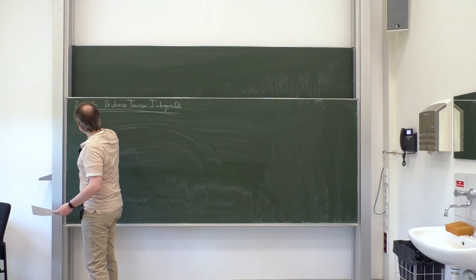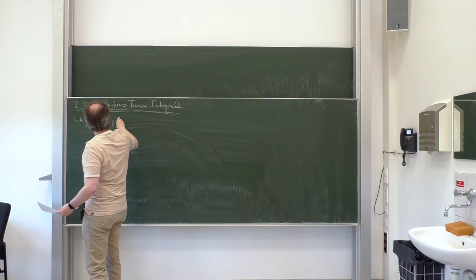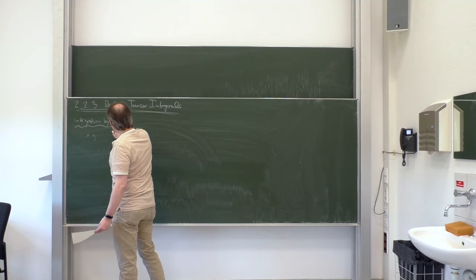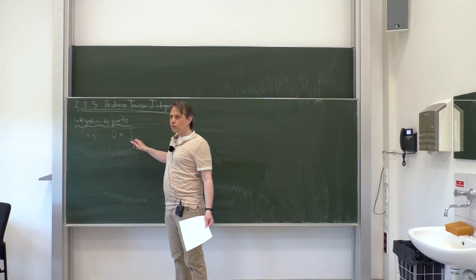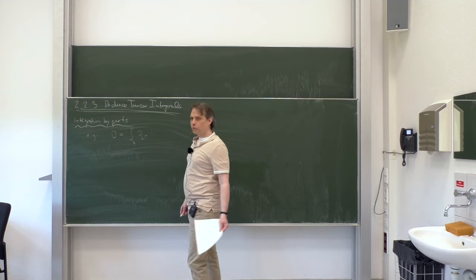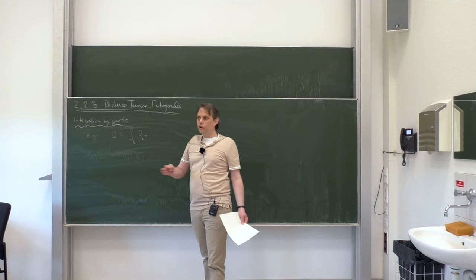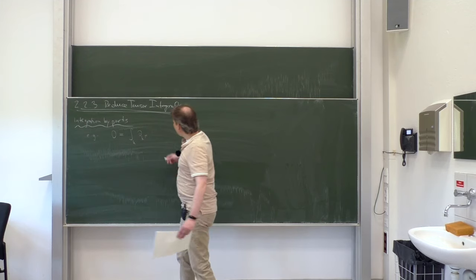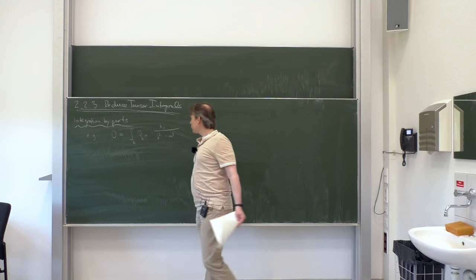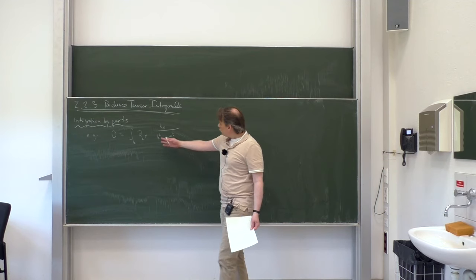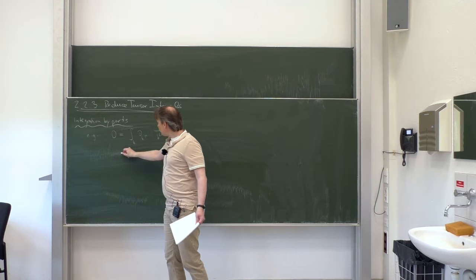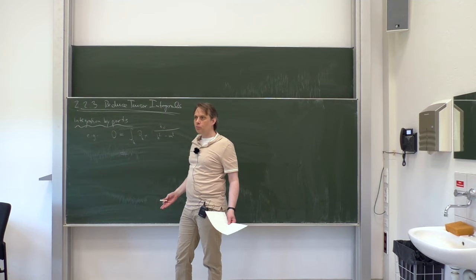The first very general method is called integration by parts. I will illustrate it with one example. You take an integral over a total derivative, d/dk_mu, and in dimensional regularization we always have shift invariance, therefore such an integral is always zero. So let us calculate an example with a non-trivial numerator k_mu and in the denominator k squared minus m squared. Evaluating the derivative under the integral sign gives two terms because of the product rule, and the two terms add up to zero, forming a relationship we can use to eliminate numerators.